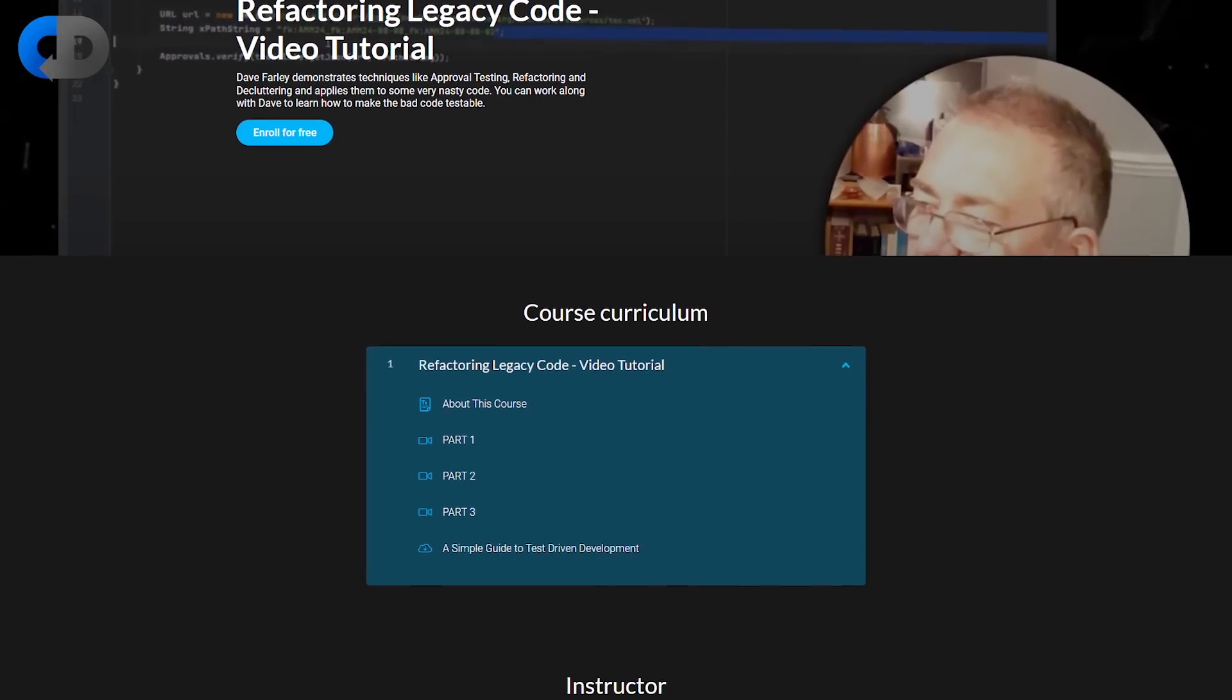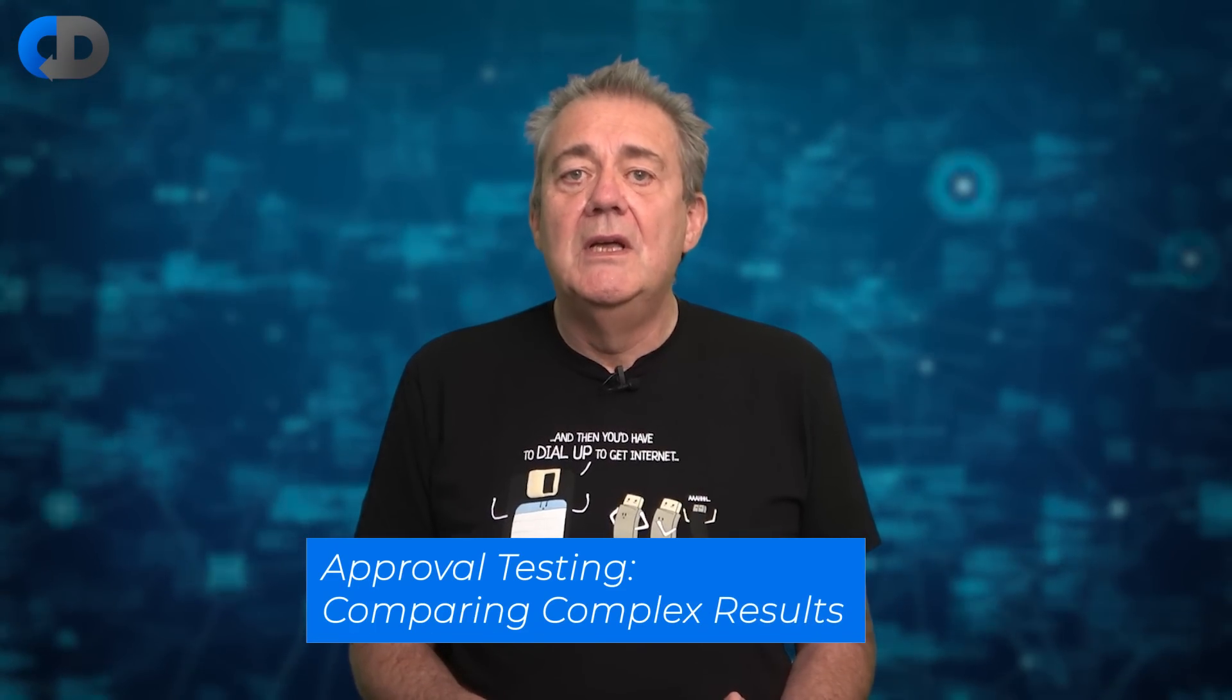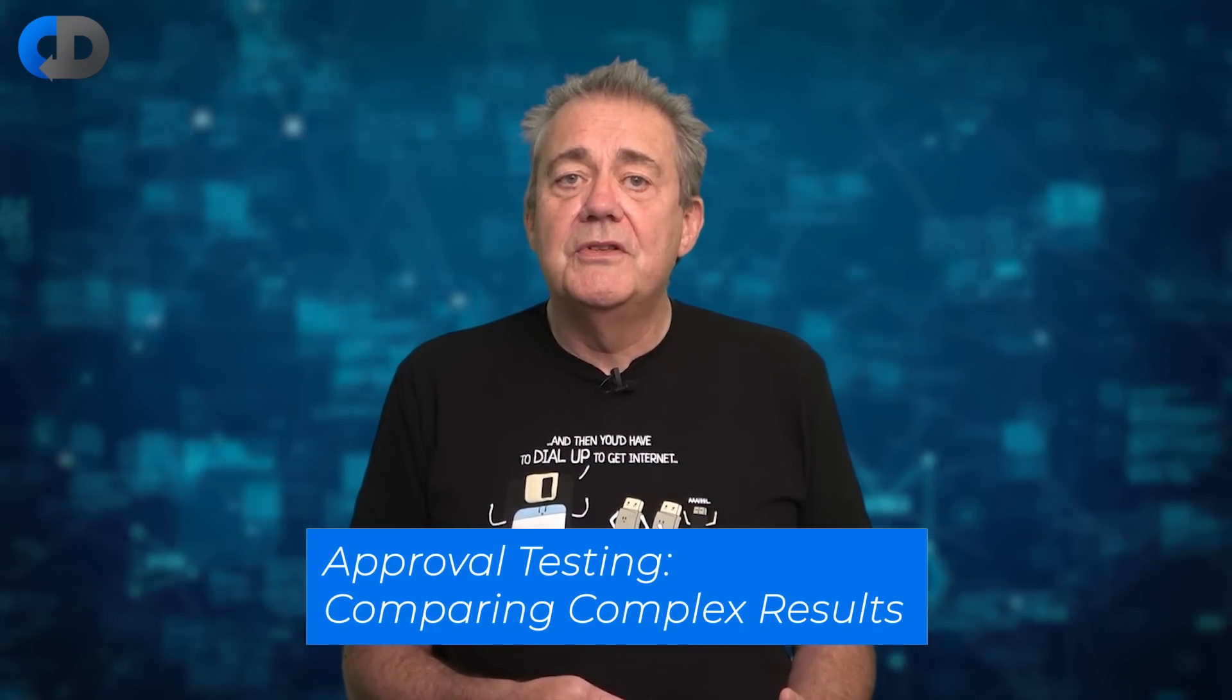So, I use approval testing almost exclusively to support refactoring in legacy systems. If you'd like to see more of my recommended approach to refactoring in legacy systems, check out this free tutorial on refactoring, including the use of approval testing. There's a link in the description below. The other place where approval tests can be extremely useful, though, is in comparing complex outputs. You have to be careful about not falling into the self-referential trap, but if you can confirm the correctness of the reference result carefully, approval tests can be extremely useful, even beyond their use in refactoring.